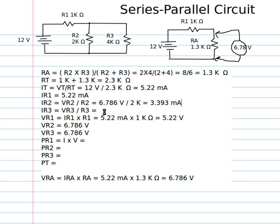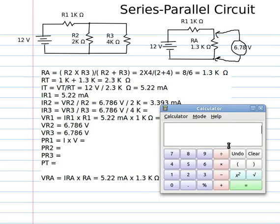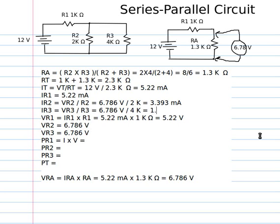That's the current of R2. And then the same thing would be true of R3. That would be 6.786 volts divided by, in this case, 4k ohms. And so we're doing that on our calculator again. This time we go 6.786 divided by 4,000. Gives us 0.0017. We'll round that off too. So that'd be about 1.7 milliamps. Now if we add those two together, does that equal 5.22? Looks like it does. Yeah, that would be 5.22. Just looking at those two numbers, you can tell they'd add up. So that checks out okay.